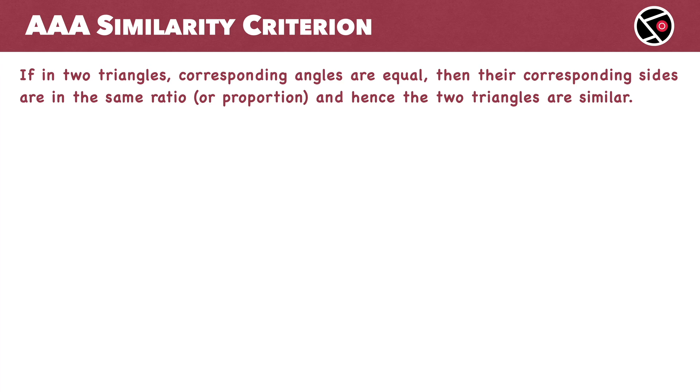Hello. Namaste. Konnichiwa. Welcome to Sunny Sensei. In this lesson, we will prove the AAA criterion for similarity of triangles. If in two triangles, corresponding angles are equal, then the corresponding sides are in the same ratio or proportion, and hence the two triangles are similar.